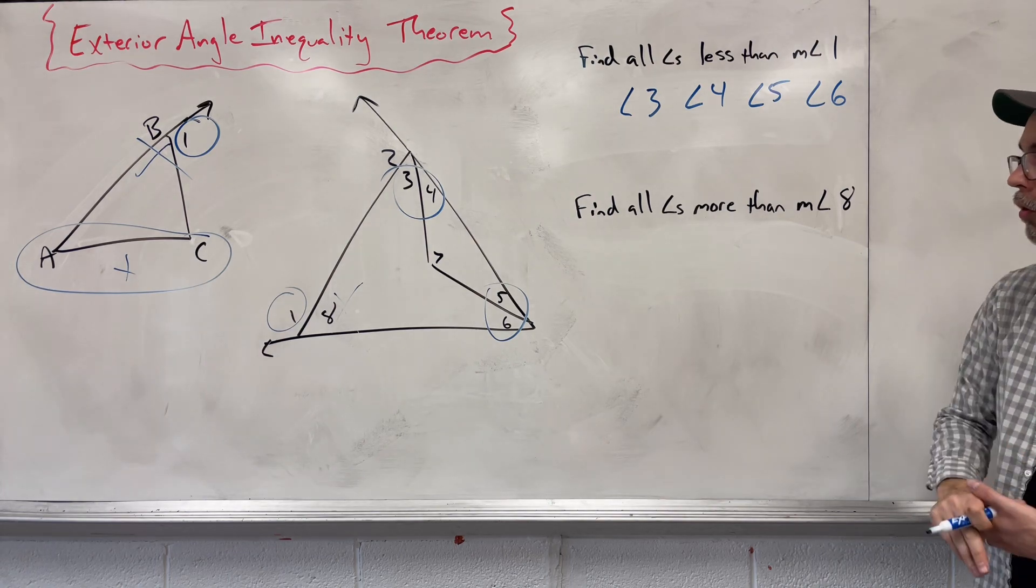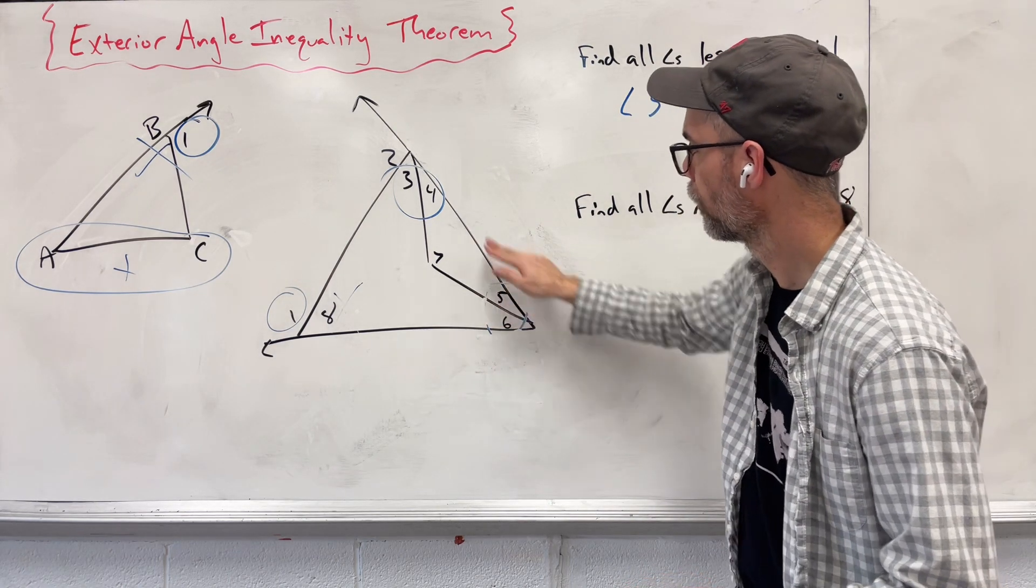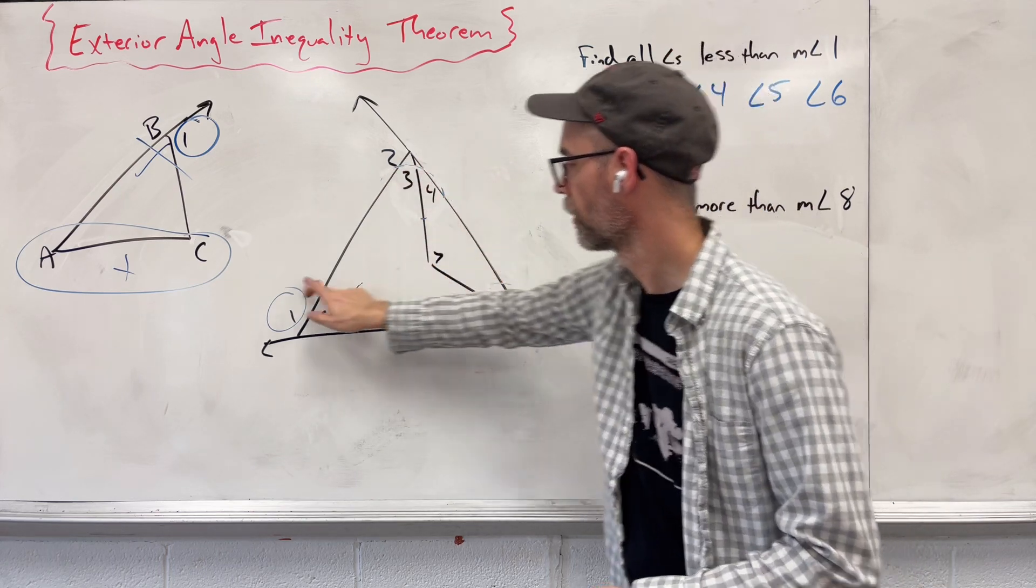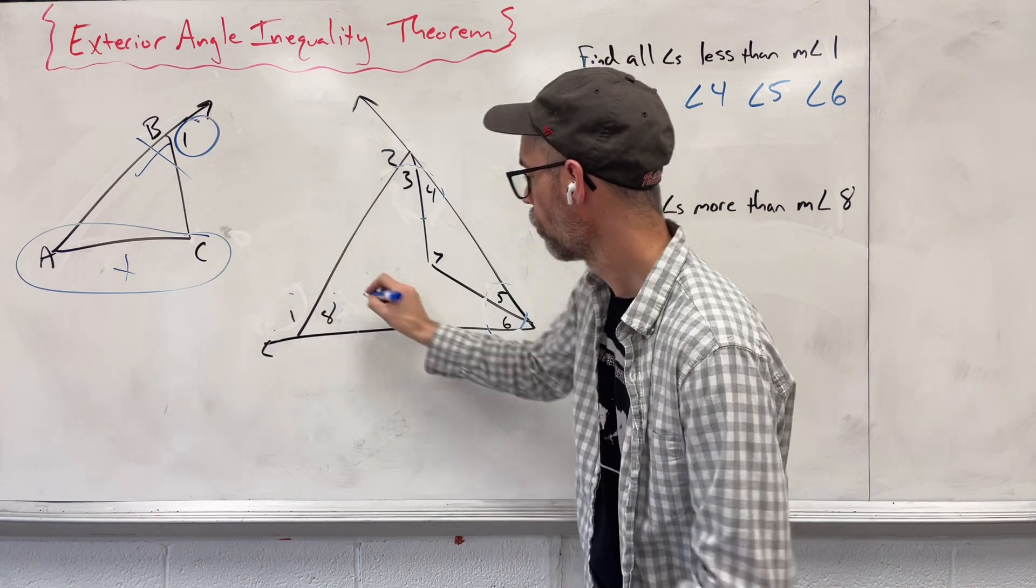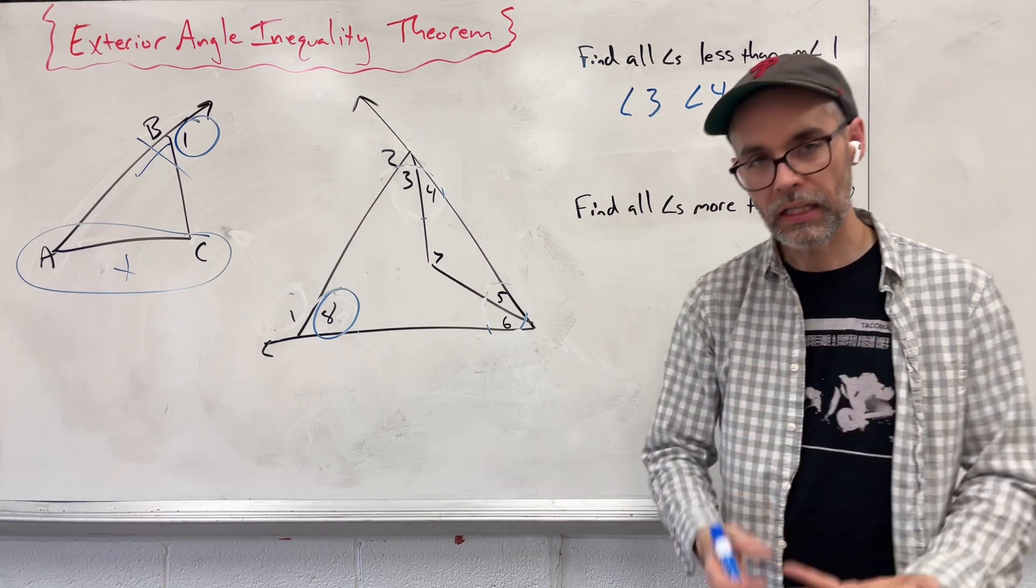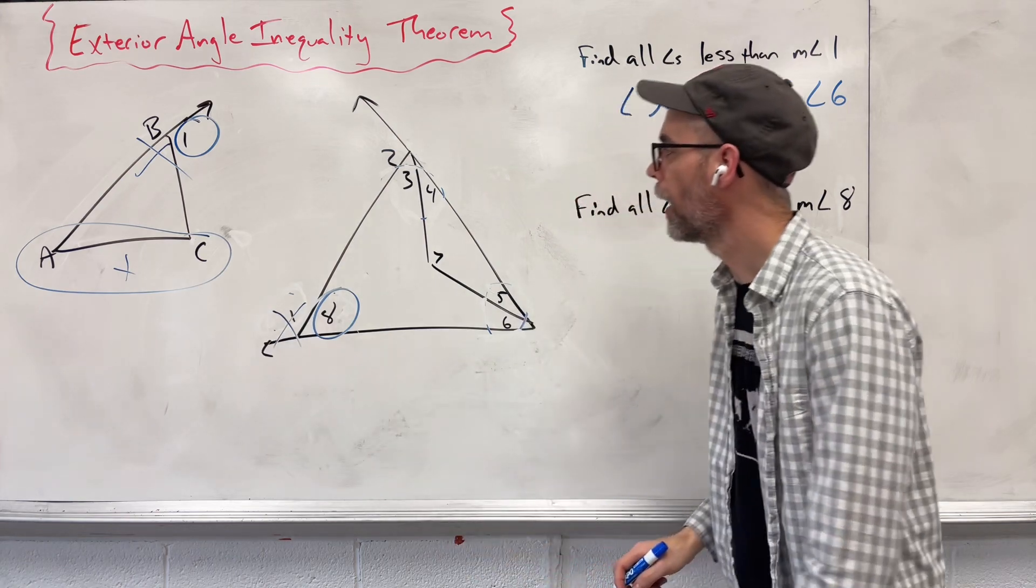Great. Now we want to find all the angles more than angle 8. So let's get rid of all this and change our focus. Now we're talking about angle 8. Angle 8 is one of our interior angles. I do not care about what's next to it—we forget about that.